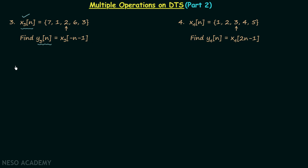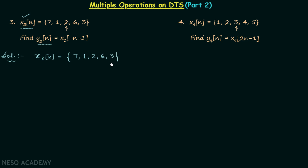Let's find signal y3n by performing multiple operations on signal x3n. Signal x3n is equal to 7, 1, 2, 6, 3, where 2 is the value of the signal when n is equal to 0.